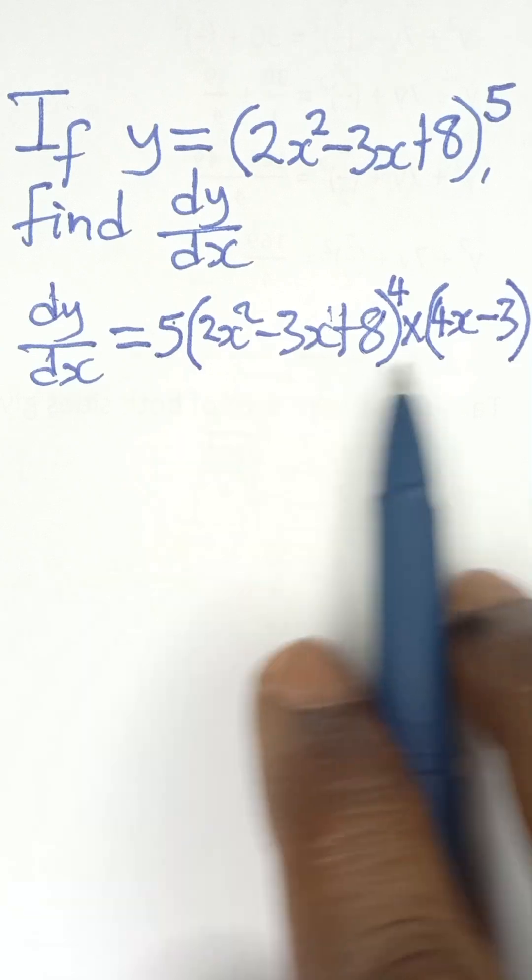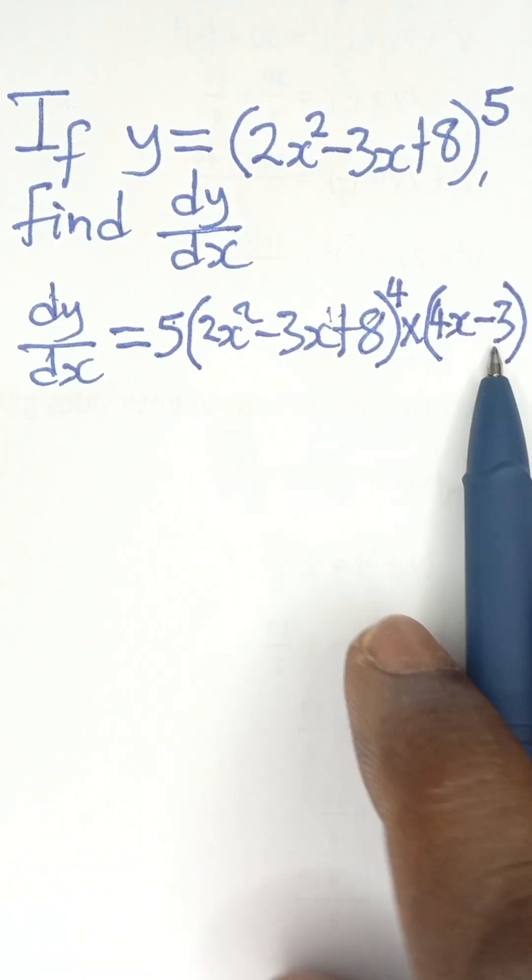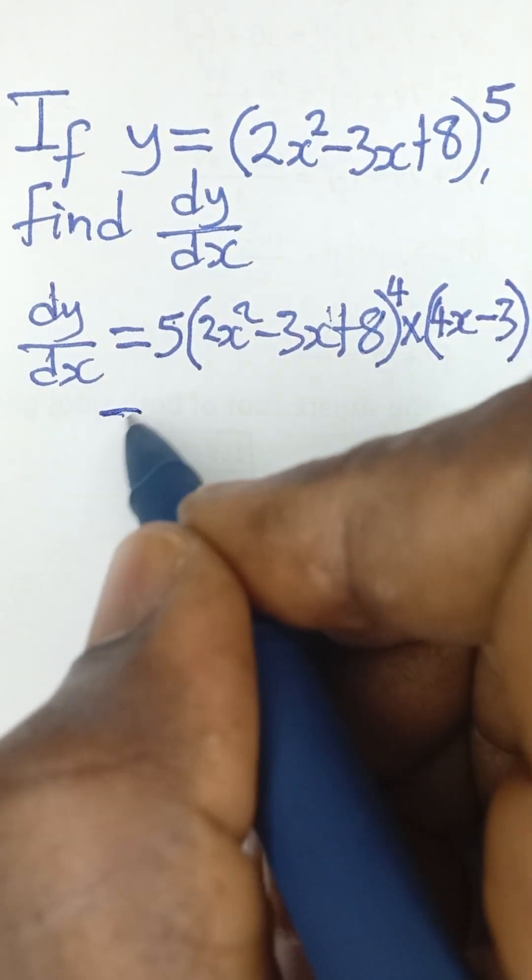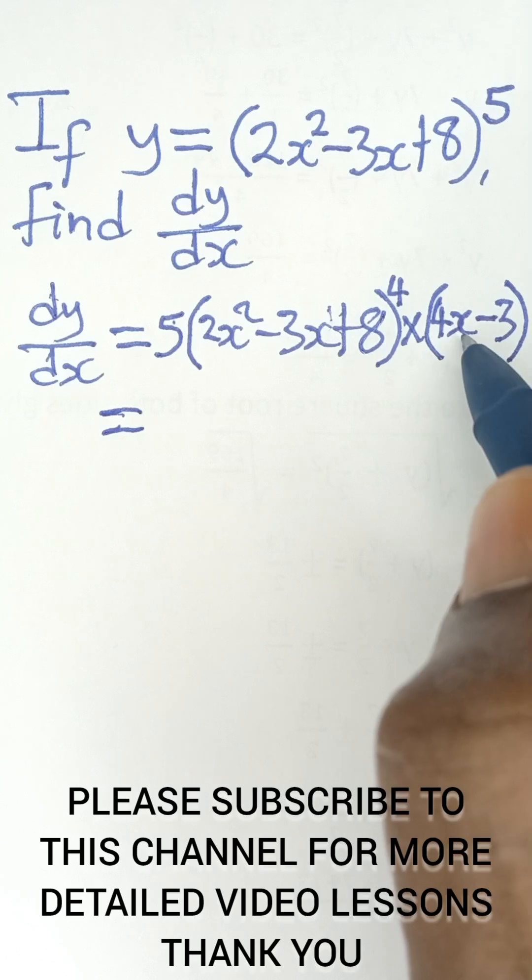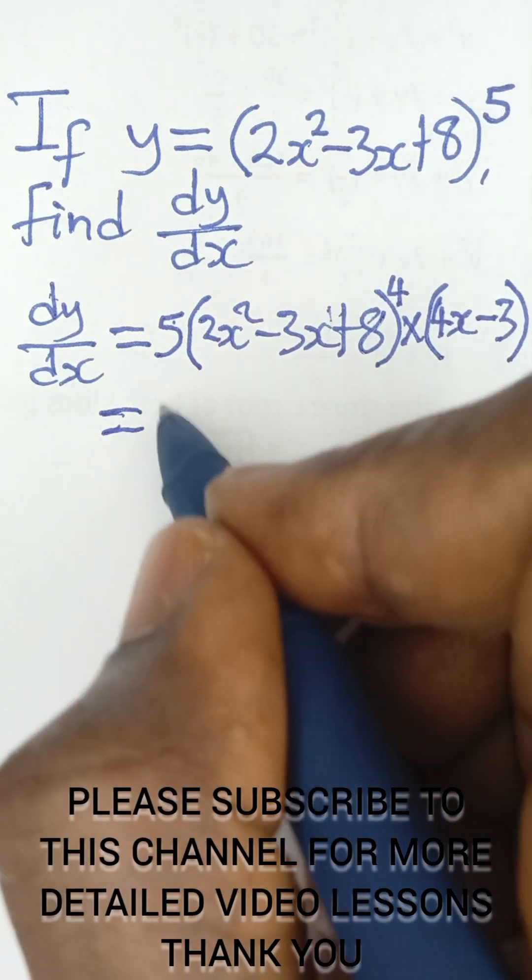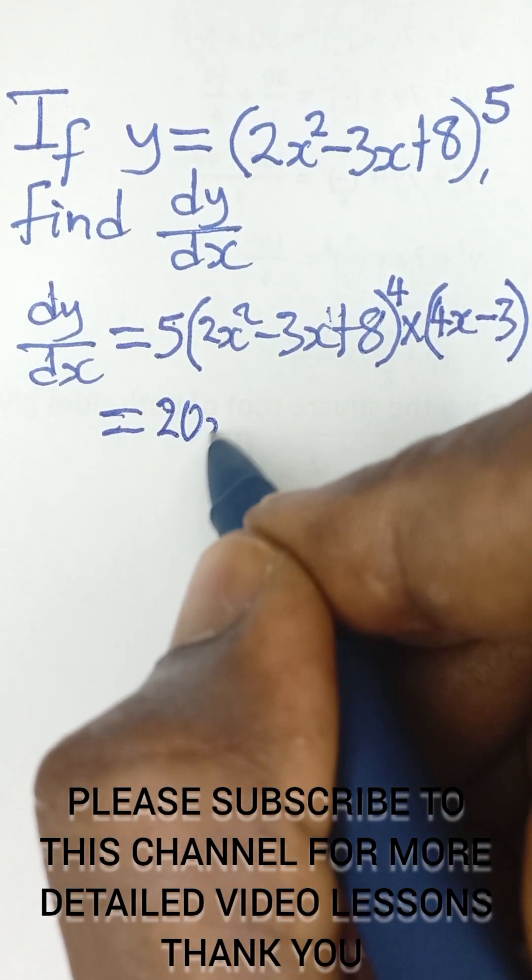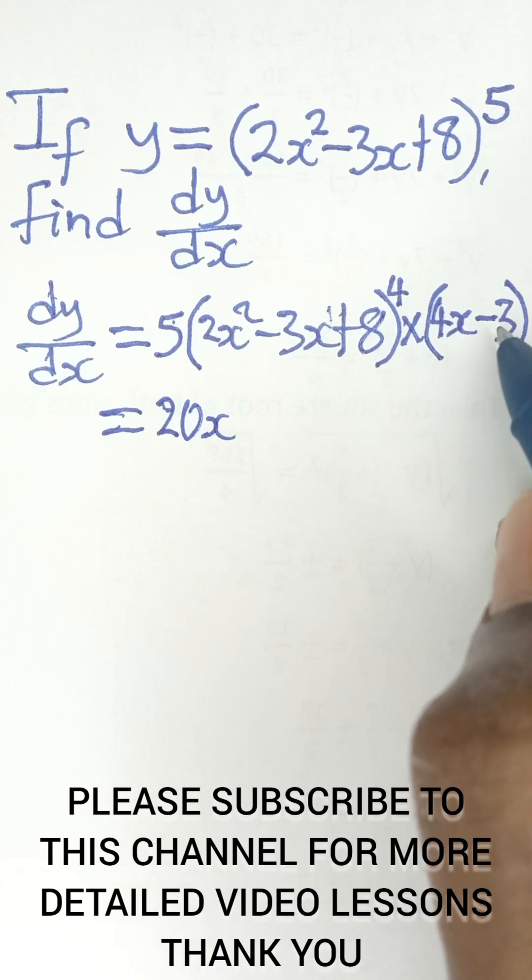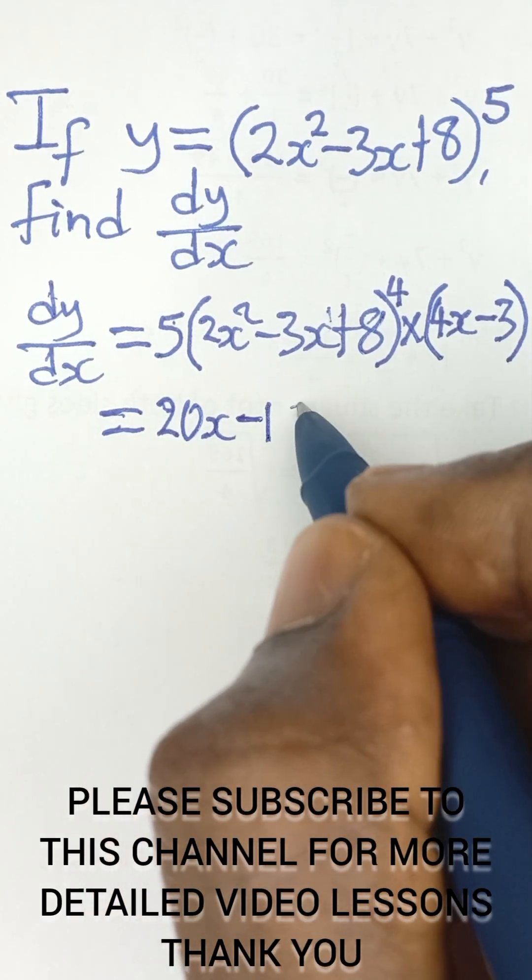So now we can use this 5 to expand this bracket. It will be easier in that way. So it becomes 5 multiplied by 4x is going to be 20x. Then 5 multiplied by negative 3 is going to be negative 15.